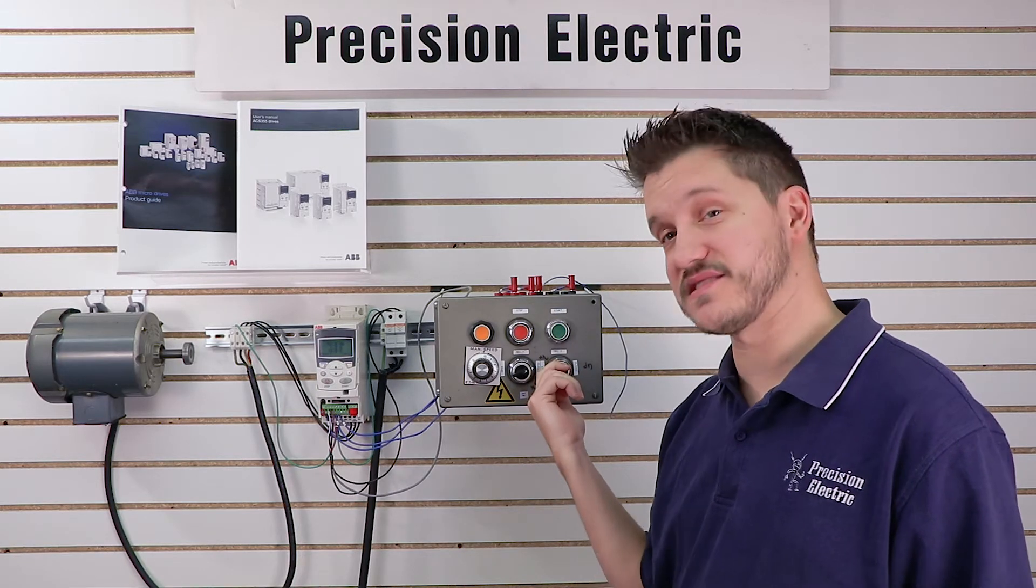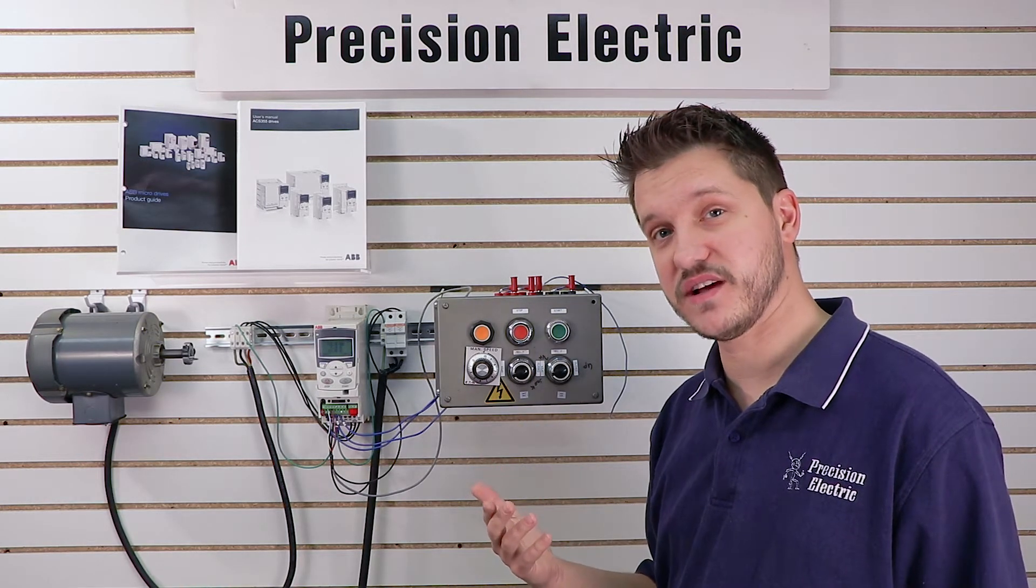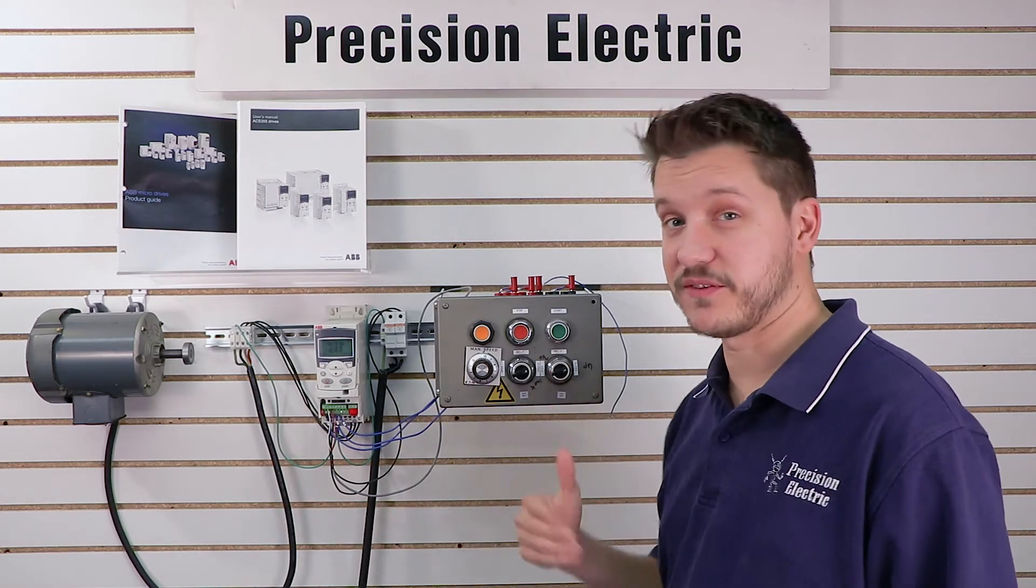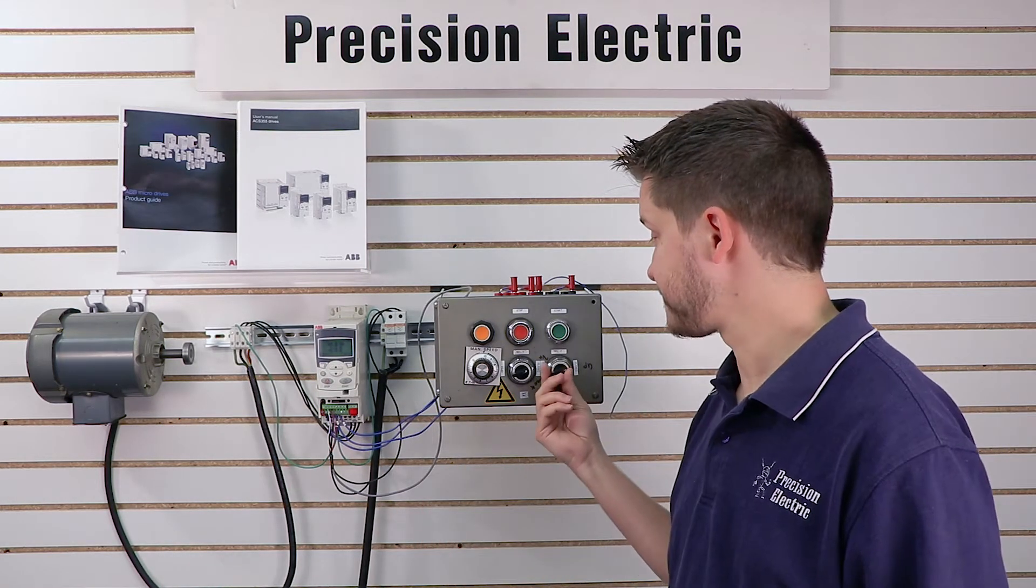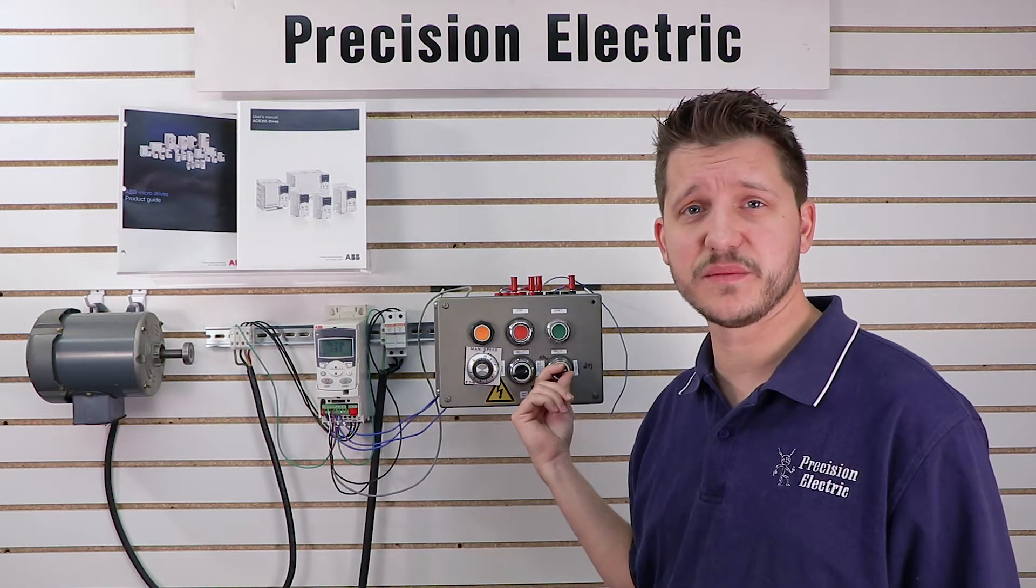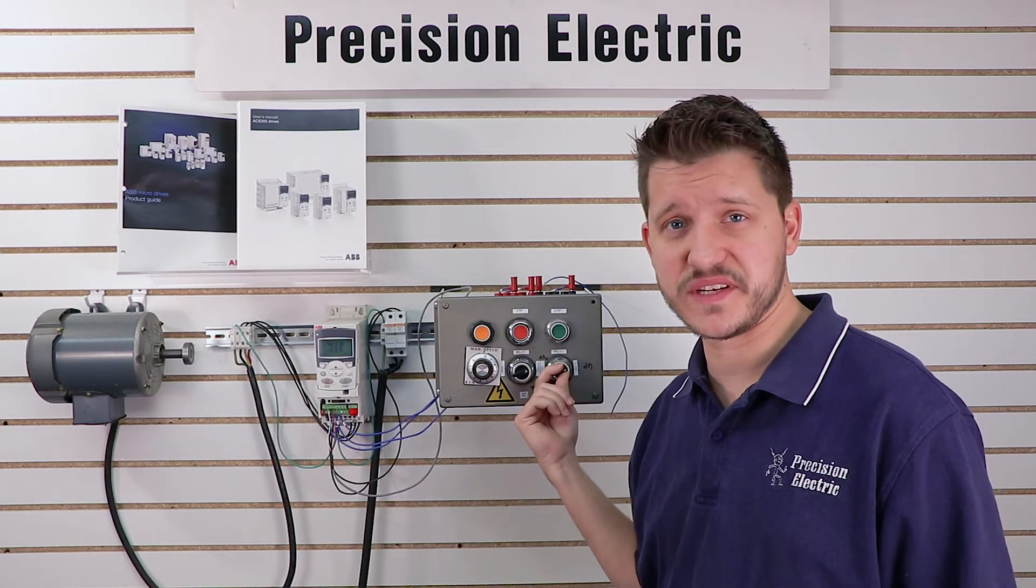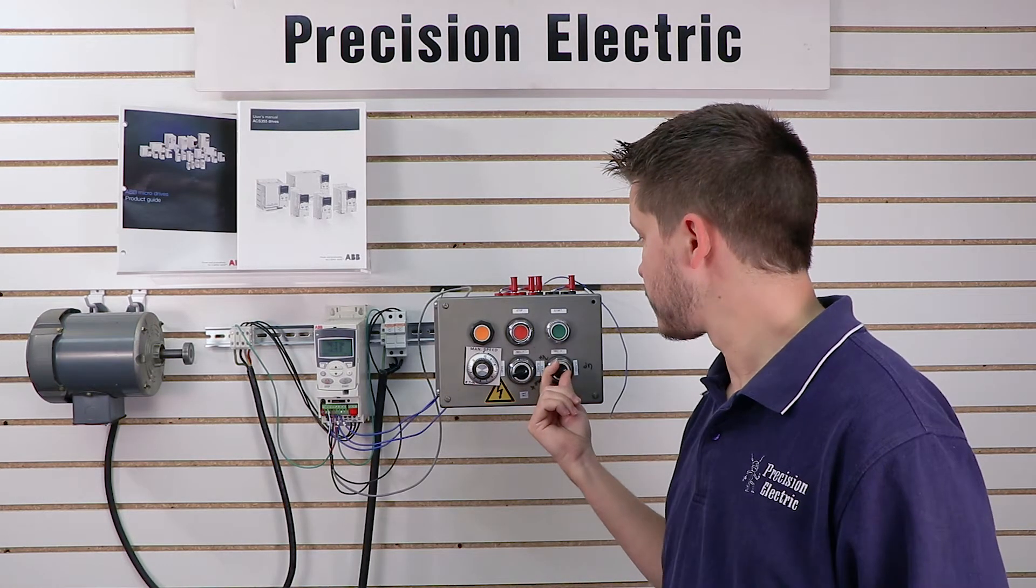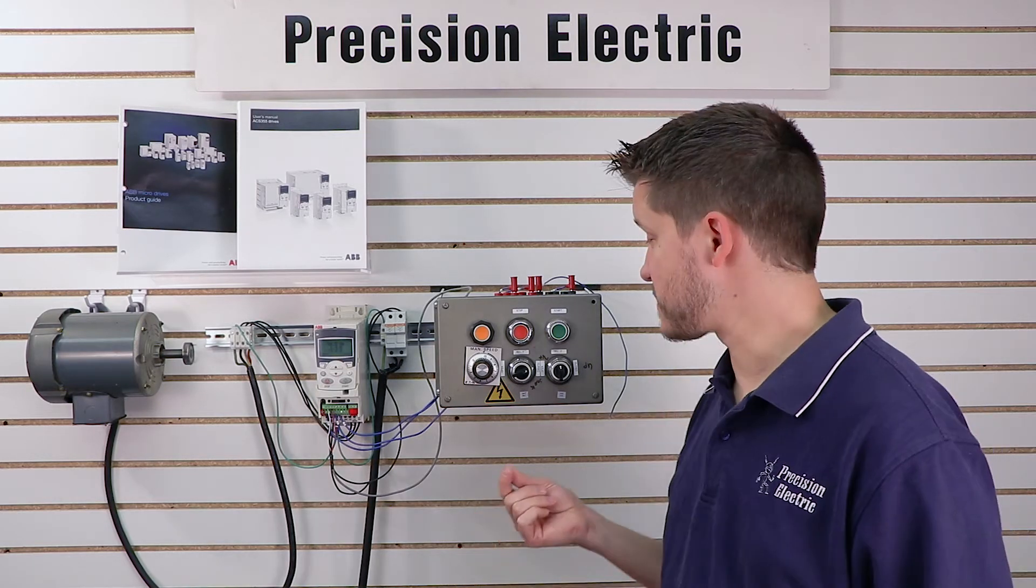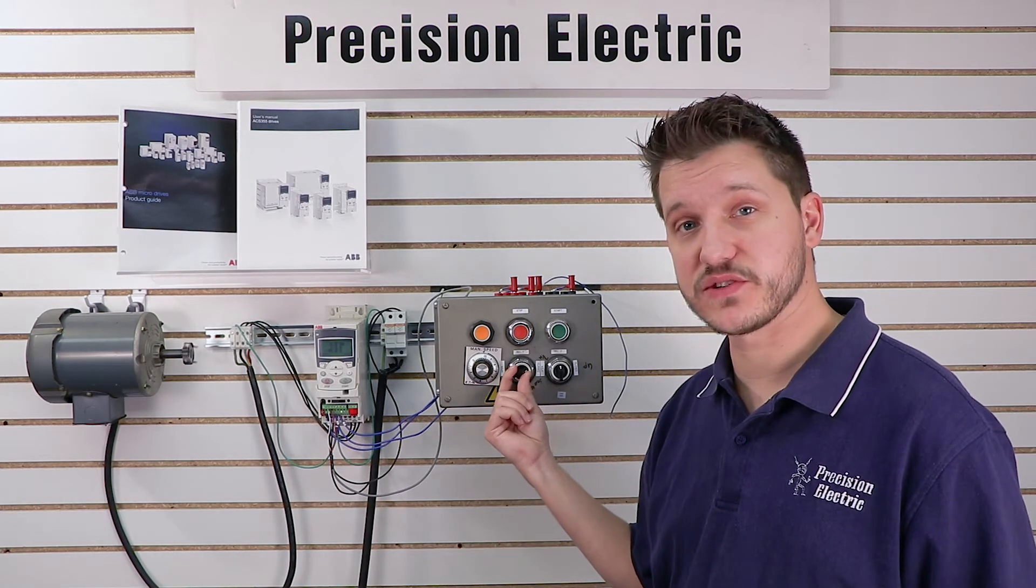And then once I flip my second switch, the drive is going to decelerate whatever rate of deceleration I specified, and it's going to head in the opposite direction at whatever acceleration I specified. The acceleration and deceleration are set up in the startup data when you go through the startup assistant as we did in the previous video. So, that is how it's done. That's how you set up your forward reverse for selector switch startup.